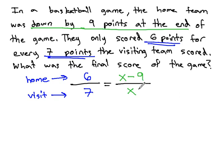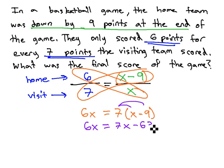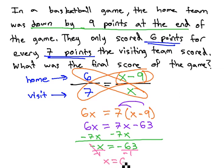Now, we have a proportion we can solve by multiplying our diagonals. 6x equals 7 times, remembering our parentheses, x minus 9. We now have an equation we can solve by first distributing the 7 to get 6x equals 7x minus 63, subtracting the 7x from both sides, negative x equals negative 63, and then dividing both sides by negative 1 to get x equals 63.